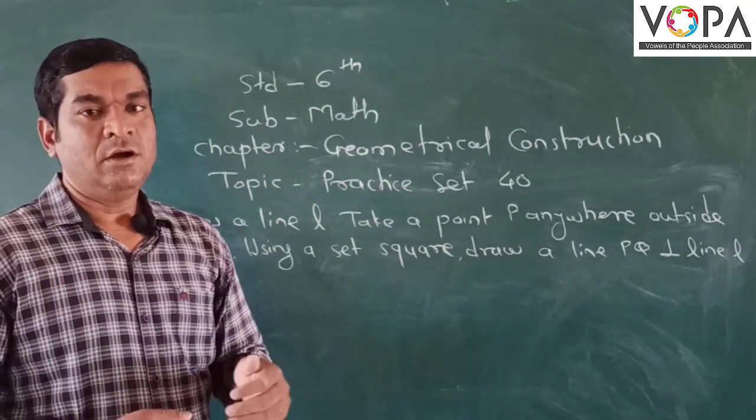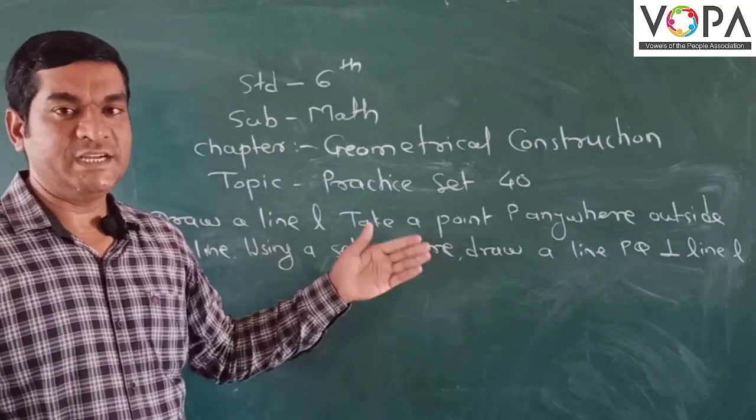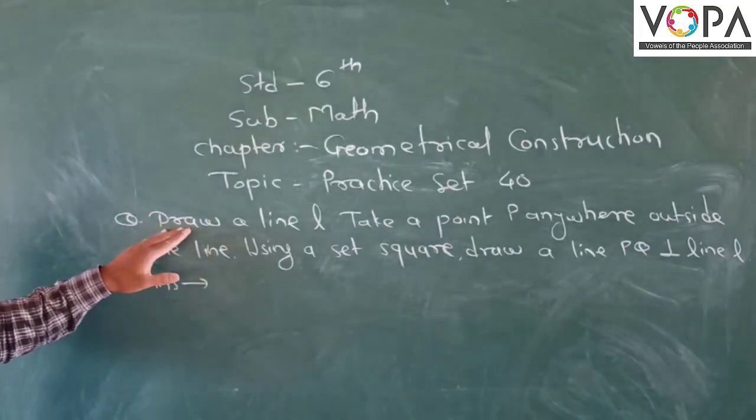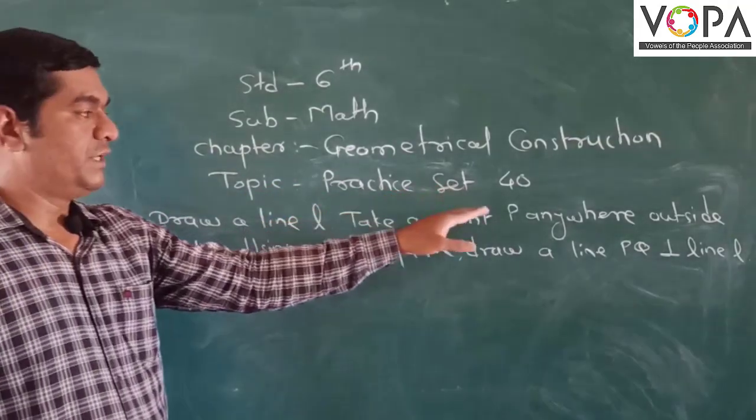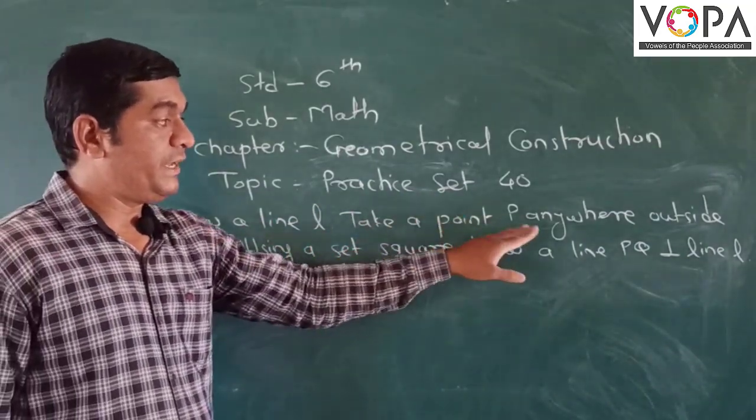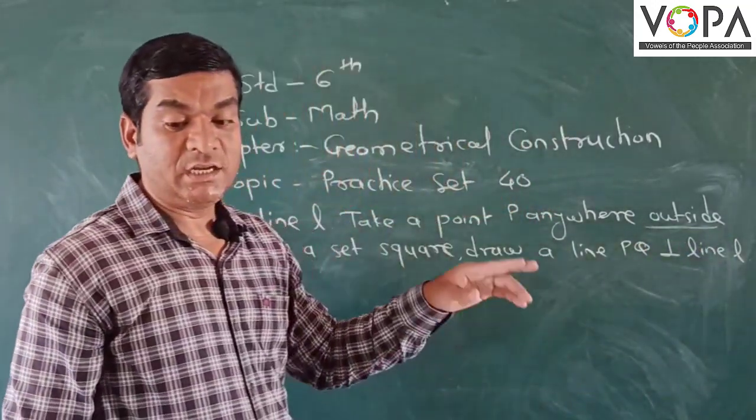As earlier in the video, we will find how to draw the perpendicular from a point outside the line and on the line. The question is in practice set: draw a line and take a point P anywhere outside the line. Outside the line.